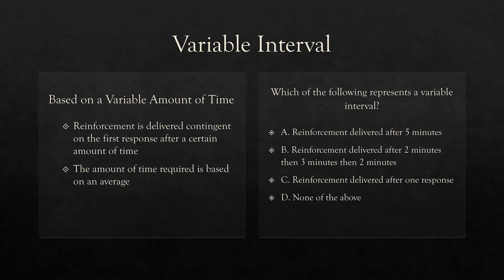Which of the following represents a variable interval schedule? We're looking for a schedule based on time that's changing. A: reinforcement delivered after five minutes — is it time? Yes. Is it changing? No, it's fixed. B: reinforcement delivered after two minutes, three minutes, two minutes — is it time? Yes. Is it changing? Yes. C: reinforcement delivered after one response — is it time? No. So the answer is B. This is how quickly you can start to do basic reinforcement schedules — very straightforward once you get a hang of them.